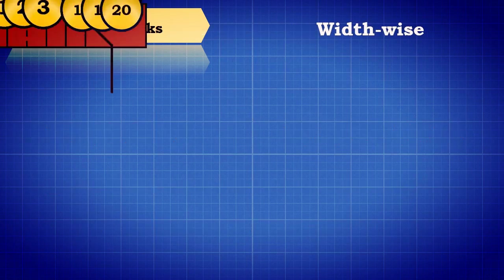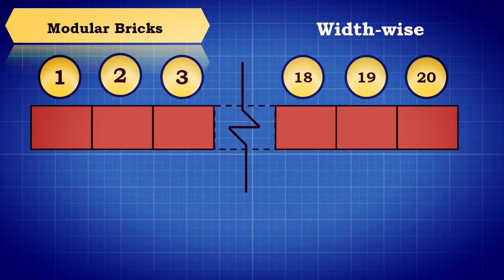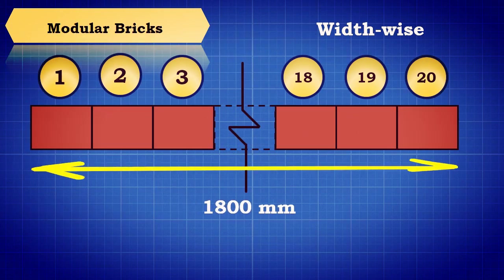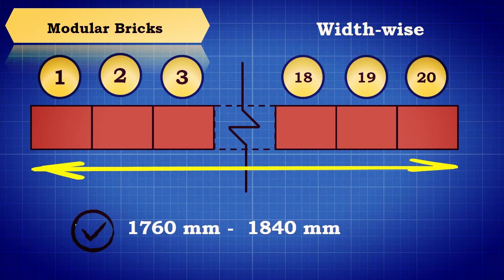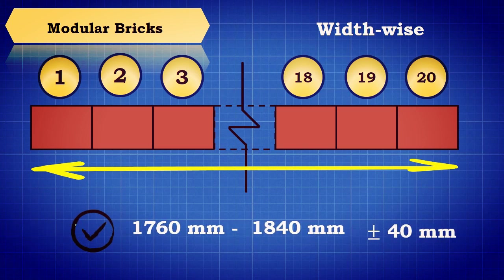When placed widthwise, the total width should be 1800 mm. The tolerance limit of acceptance is between 1760 mm and 1840 mm, that is plus or minus 40 mm.